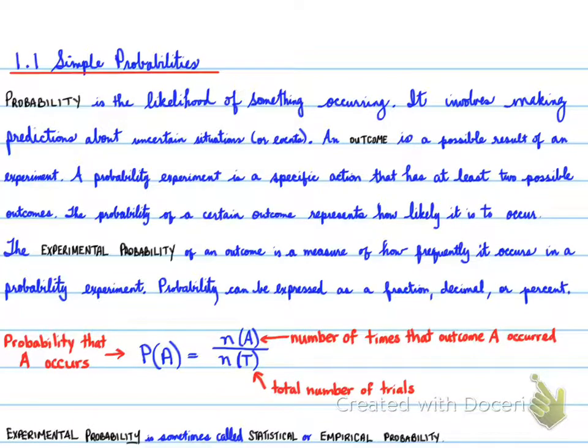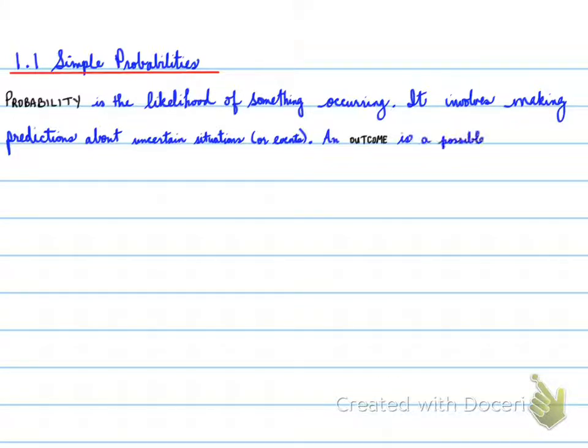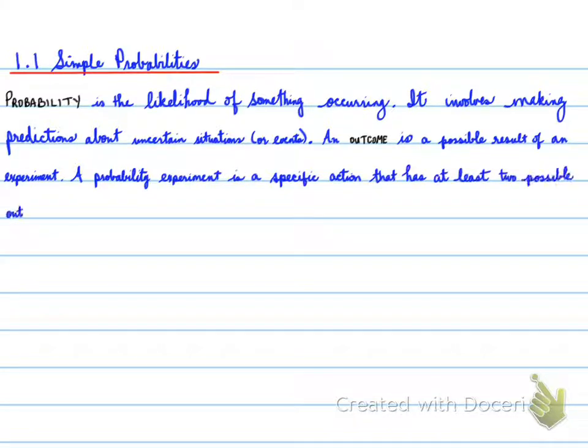All right, folks, here we go. 1.1 Simple Probabilities. Let's look from the very beginning. Probability is the likelihood of something occurring. It involves making predictions about uncertain situations or events. An outcome is a possible result of an experiment conducted.